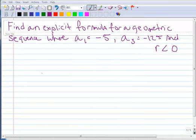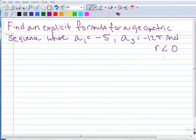All right, so here's an example. We want to find an explicit formula for a geometric sequence. We know that a sub 1 is negative 5, we know that a sub 3 is negative 125, and that's all we know for terms. But we know that the r is less than 0, which means it's negative.